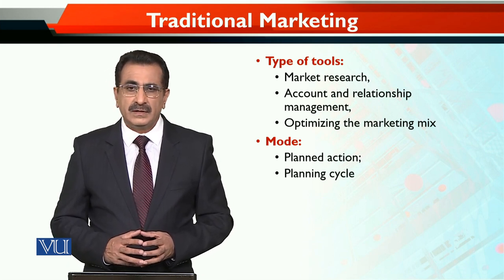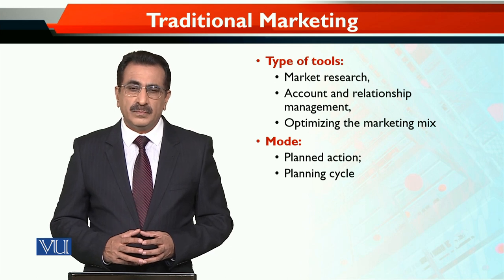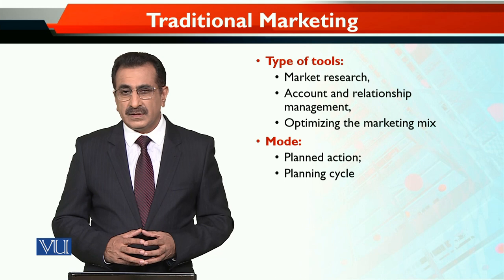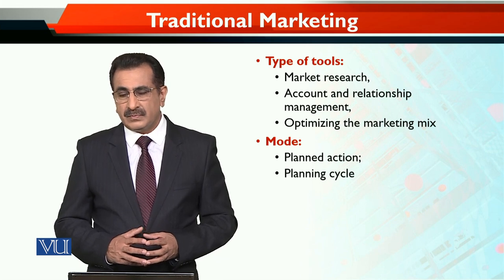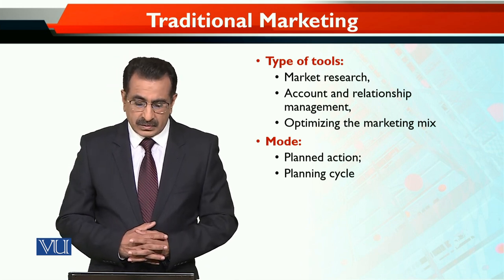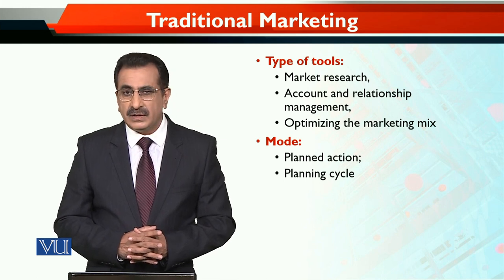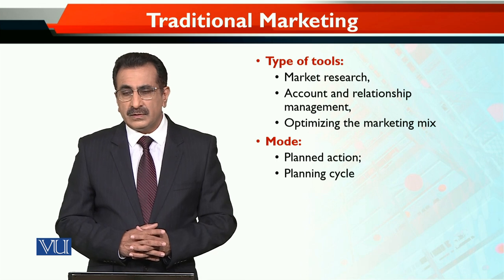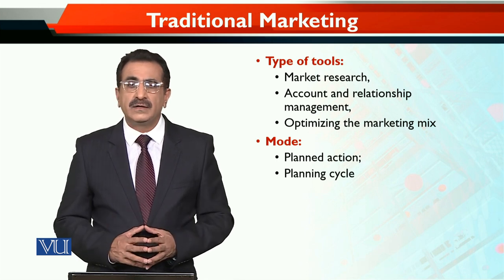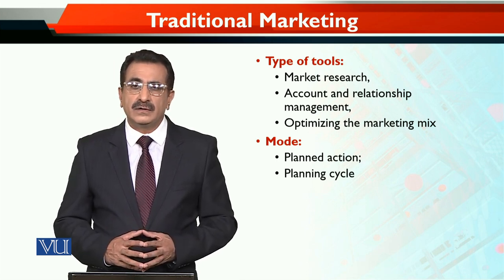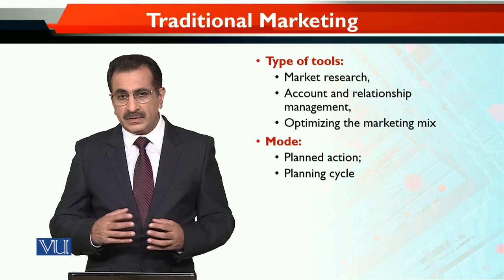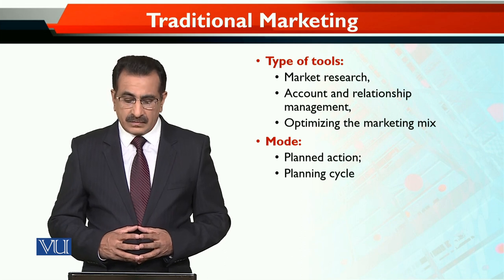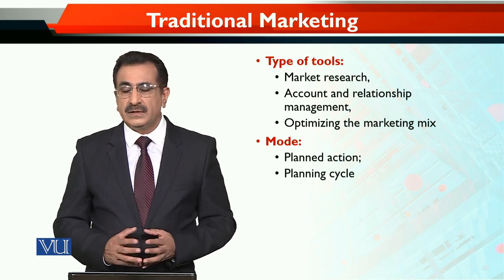Another key tool is optimizing the marketing mix. The marketing mix is the combination of four Ps: product, price, place, and promotion — what the product will be, what its price will be, how it will be distributed, and how people will be informed about and motivated toward the product. The adjustment and re-adjustment of the marketing mix is an important tool of traditional marketing.